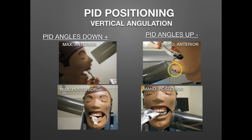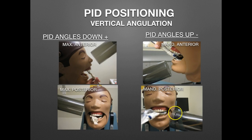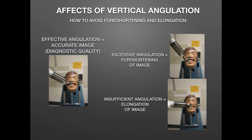For mandibular anterior, use the symphysis of the chin. For mandibular posterior, use the inferior border of the mandible and the commissures of the lips, and for molars align with the outer canthus. Those are the PID vertical angulation positions for the bisecting technique.